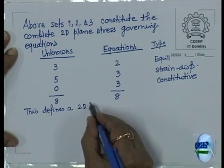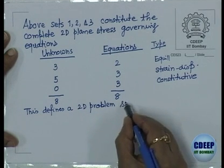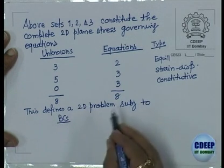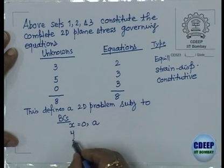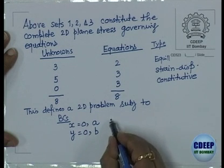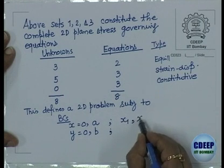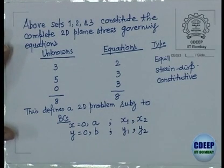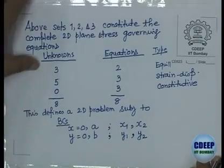This defines the 2D problem, subject to boundary conditions on x equal to 0 and a, and y equal to 0 and b - or more generally x1 and x2, y1 and y2. It is not necessary to always start from the origin. Now we start thinking about our method.